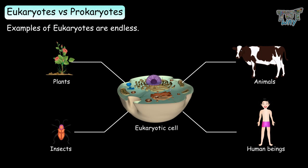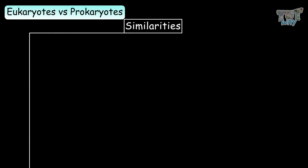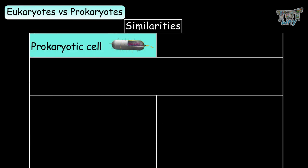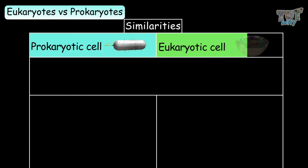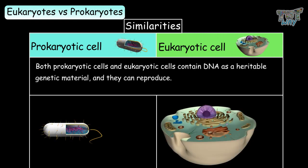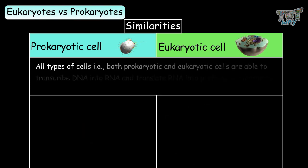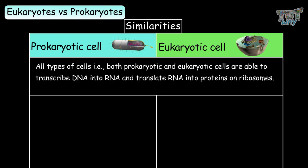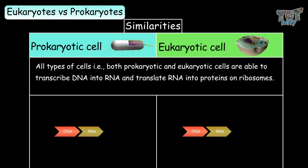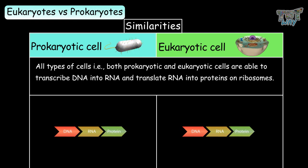Now we will learn some similarities between prokaryotic and eukaryotic cells. Both contain DNA as heritable genetic material and can reproduce. All types of cells are able to transcribe DNA into RNA and translate RNA into proteins on ribosomes.